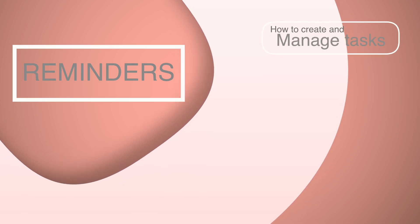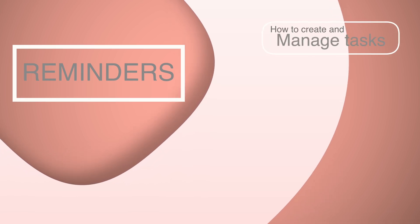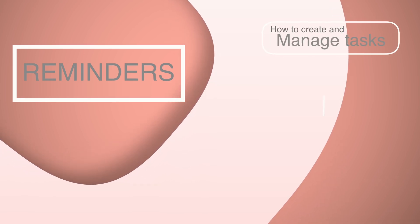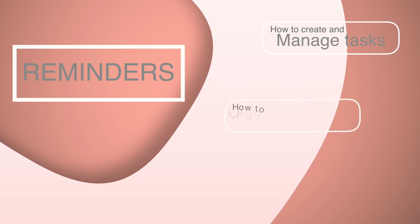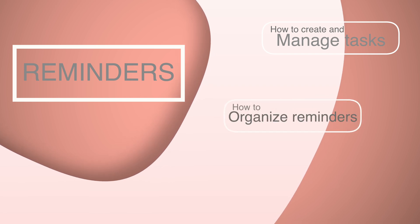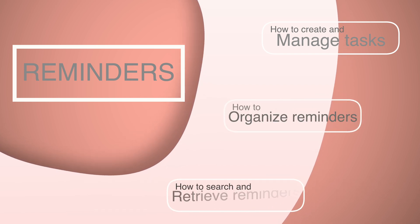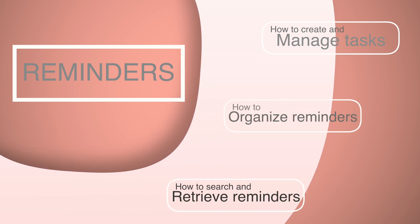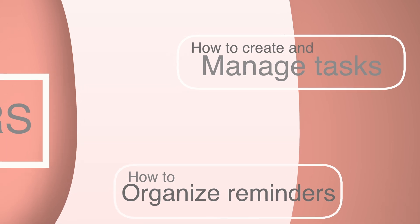Now we know how the user interface is organized in the Reminders app. Let's get into three main categories: one, how to create and manage tasks and reminders; second, how to organize reminders; and third, how to search and retrieve reminders. Let's start with creating reminders — what we saw was just scratching the surface, so let's get into the details.